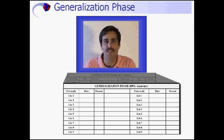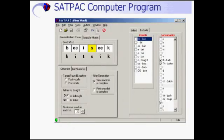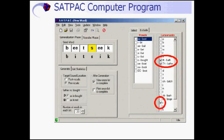After the target sound has been successfully established, it needs to be generalized. It's at this point that the computer-generated lists come into play. Note the seed word beat-seek and how the chosen target sound is highlighted in yellow. The SATPAC program is unique in that any sounds not in the student's repertoire, or sounds which may interfere with the target sound, can be excluded. For this particular student, the TH sounds are excluded as they interfere with the target S, and the R sound is excluded because it's not in the student's repertoire.